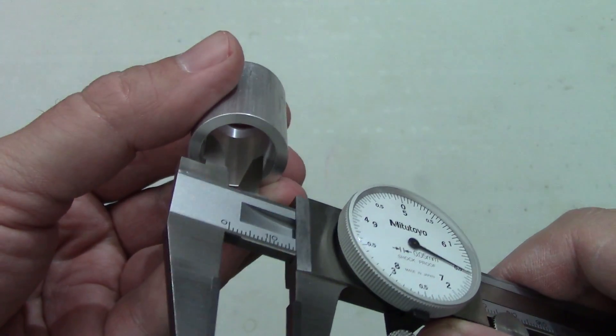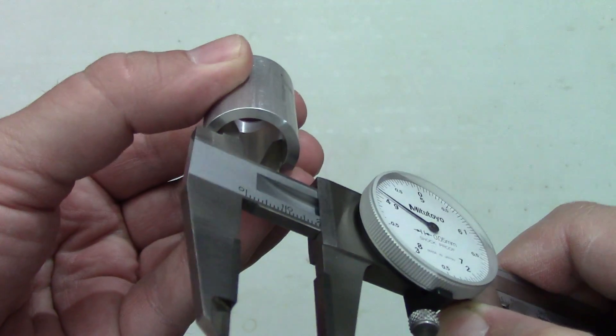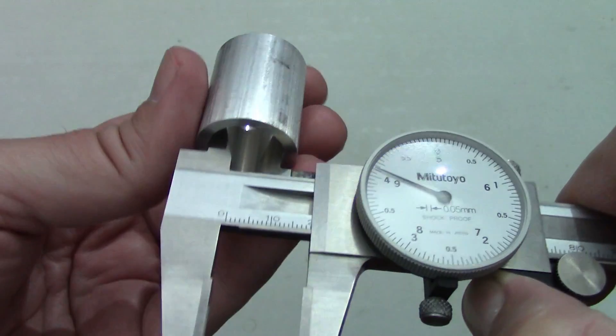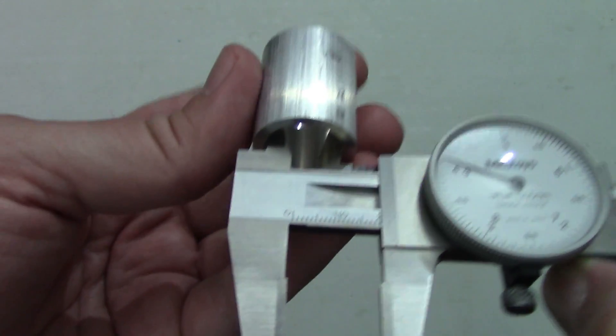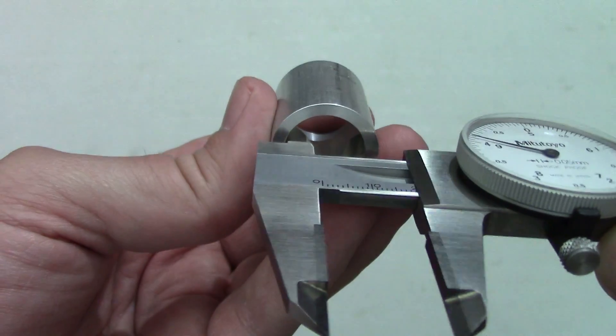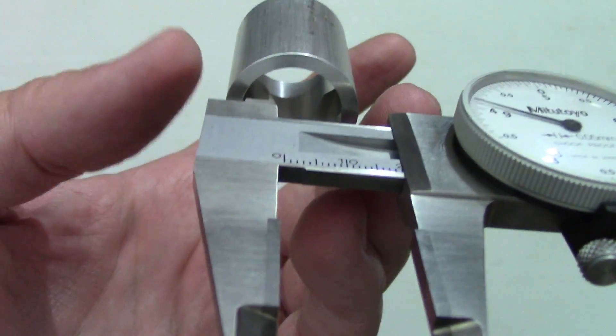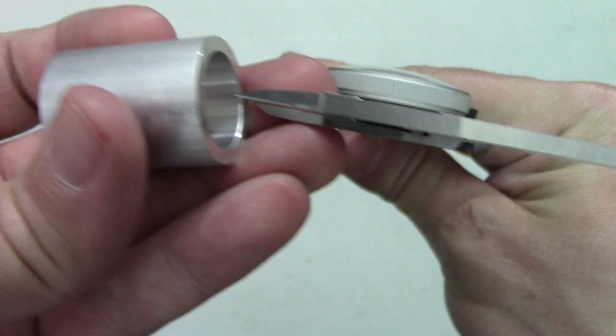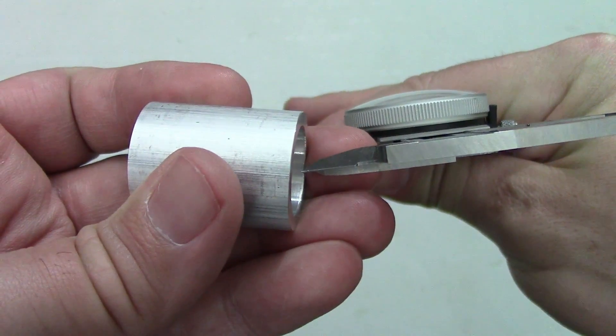Likewise, when you're measuring with the inside jaws, you need to slightly rotate the jaw within the part to find the spot where the jaws settle into the measurement. This is a bit easier on an inside diameter because the jaws will eventually find the high spots across the diameter of the circle, and it will be difficult to hold the jaws at an angle to the part.